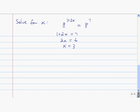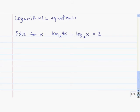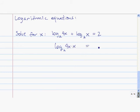Let's move on to logarithmic equations. The first thing I'm going to do to solve this equation is condense the logarithmic expression on the left-hand side — we want to have only one log, no sum or difference of logs. So log base 2 of 4x plus log base 2 of x is equal to log base 2 of 4x times x, and that equals 2.